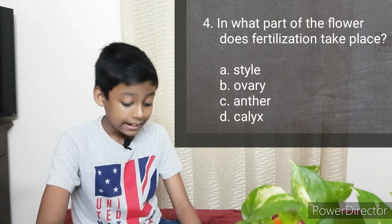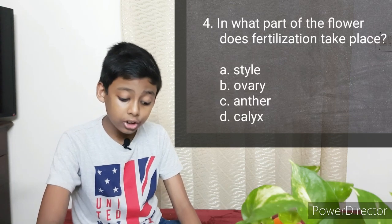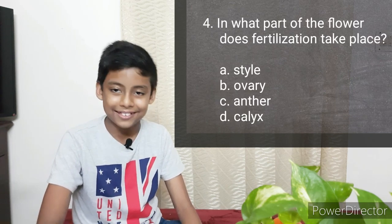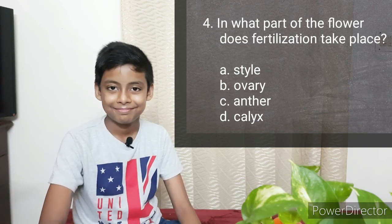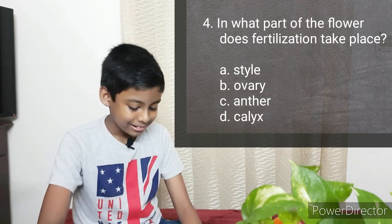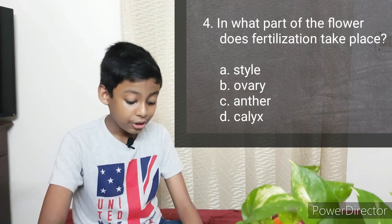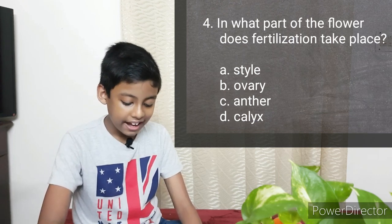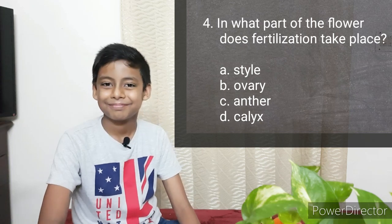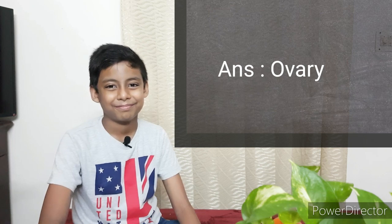The fourth question is: In what part of the flower does fertilization take place? Options: Style, Ovary, Calyx. The answer is Ovary.